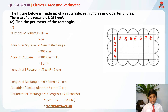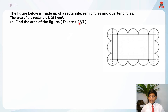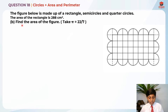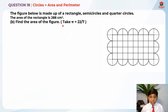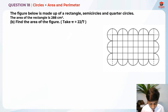Let's move on to part B. Find the area of the figure. They tell us to take π = 22/7. We already know the area of the rectangle is 288 cm².